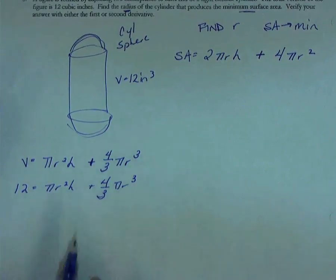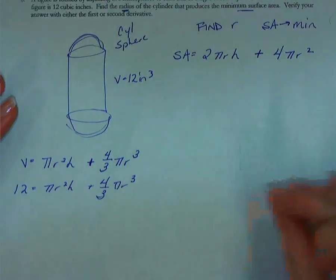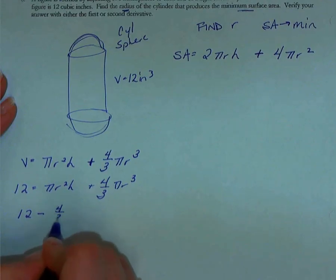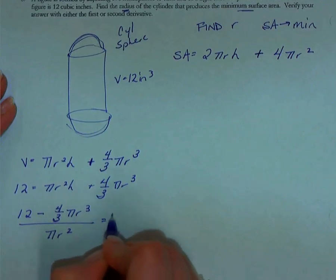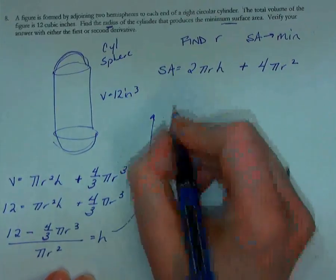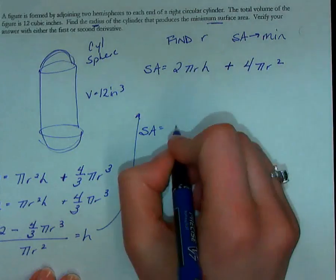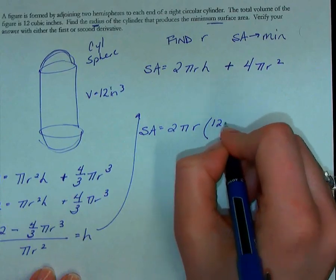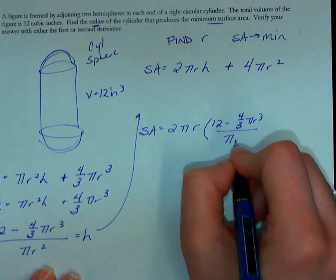And at this point I'm going to solve for h that I can then substitute in. I'll have a full formula for surface area all in terms of the radius. So 12 minus (4/3)πr³ divided by πr² is equal to h. So that's what's going to come back up into my formula. Surface area is equal to 2πr times h, which is (12 - (4/3)πr³) over πr², plus 4πr².